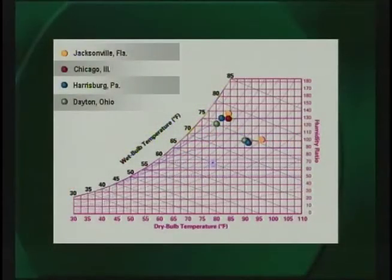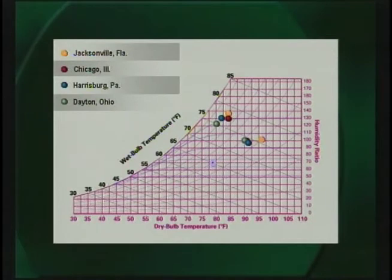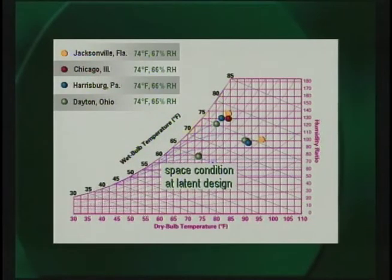For our discussion today, it's important to remember that peak sensible load rarely occurs at the same time as peak latent load. In John's Jacksonville example, sensible peak occurred at dry bulb temperatures of 96 degrees and higher, while latent peak occurred at an average dry bulb of 84 degrees — definitely different days. This brings up a common misconception that space humidity control is only a concern in the humid climates of the southeastern United States. Here are the outdoor sensible and latent design conditions for Chicago, Illinois; Harrisburg, Pennsylvania; and Dayton, Ohio. The design conditions are not all that different — space conditions would be acceptable at sensible design, but would present a problem at latent design conditions, with space relative humidity ranging from 65 to 67 percent, regardless of location.